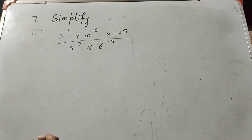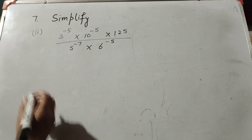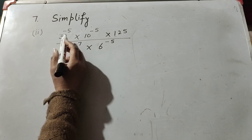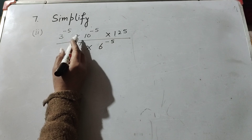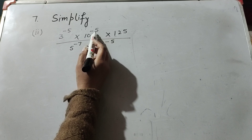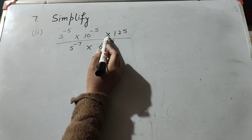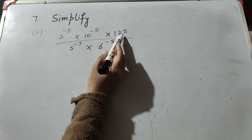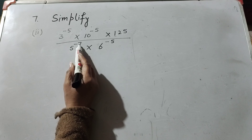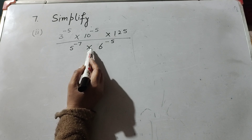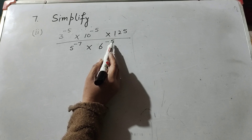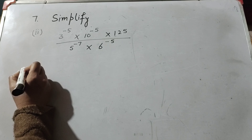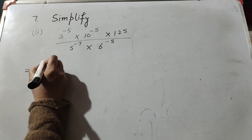So now we move to the second part: 3 raised to power minus 5 into 10 raised to power minus 5 into 125, over 5 raised to power minus 7 into 6 raised to power minus 5.